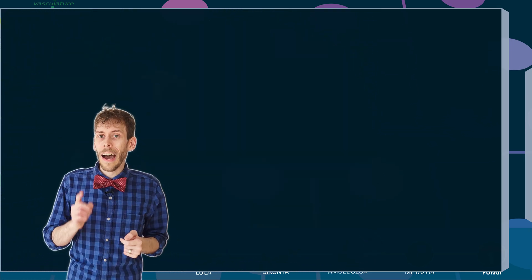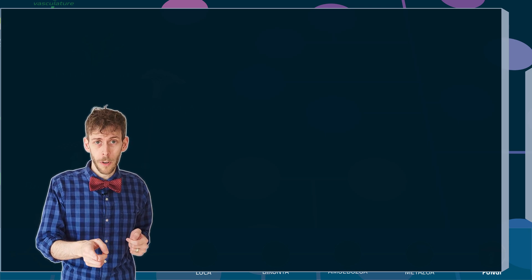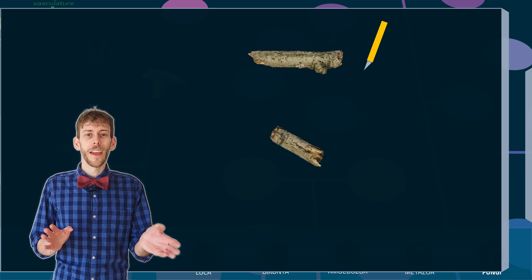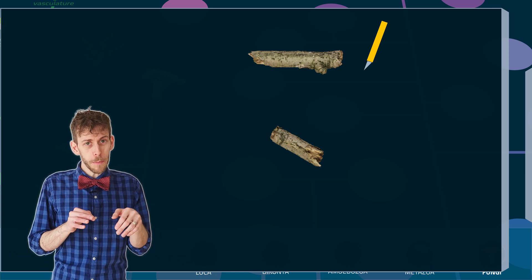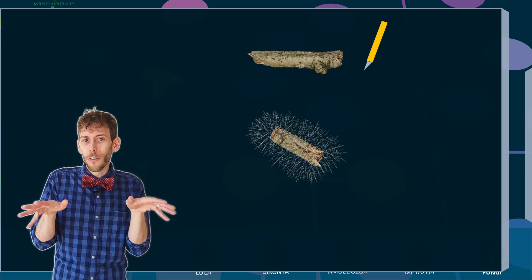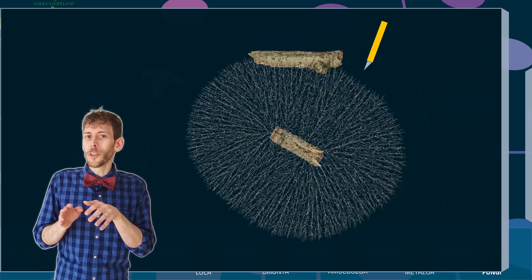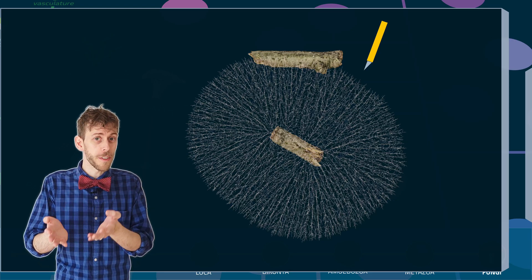Or so I thought, until I read about this experiment. A fungus grows on a piece of wood, decomposing it. And as you would expect, all the tips spread out in search for more food, equally in all directions. And as you can see here, some tips have found a new piece of wood, so they grow towards it.